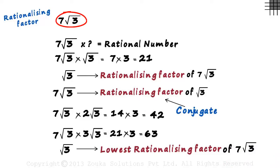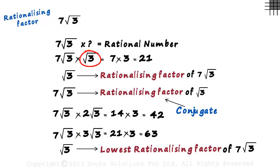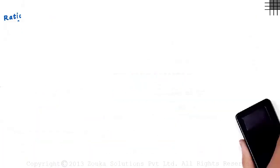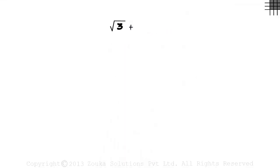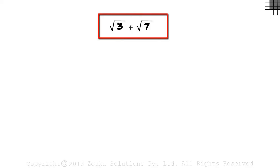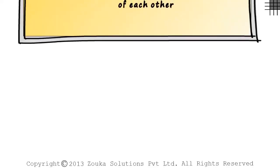If we have 7 root 3 in the denominator, we can use any of these numbers to rationalize it, but it is recommended that we take the lowest positive one. It's pretty simple to find the rationalizing factors of such numbers — we just have to make sure that we get a rational number as the product. But what if the number is like root 3 plus root 7? We will see that in the next part of this video.